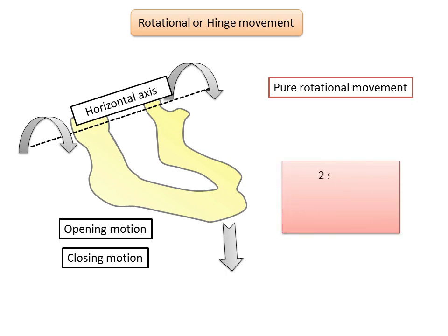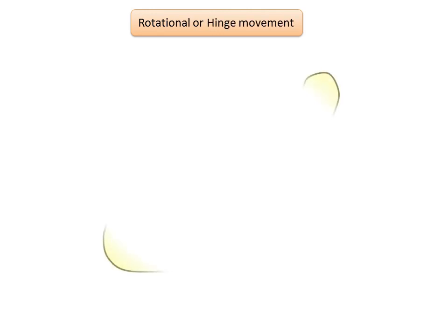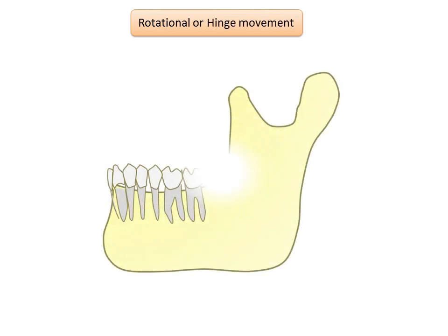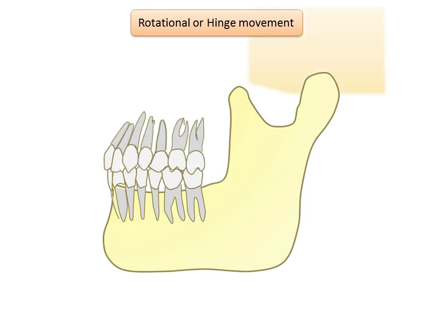Mandibular activity occurs in two stages: rotational and translational. Rotation is the movement of a body about its axis. In the masticatory system, rotation occurs when the mouth opens and closes around a fixed point or axis within the condyles. In the first stage, the condyles are stabilized in their most superior positions in the articular fossae, which is the terminal hinge position.